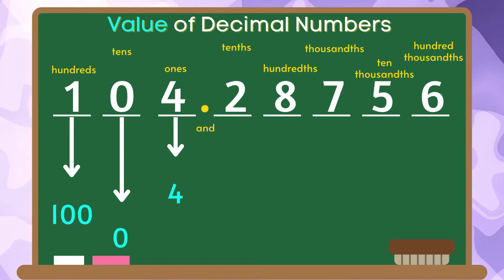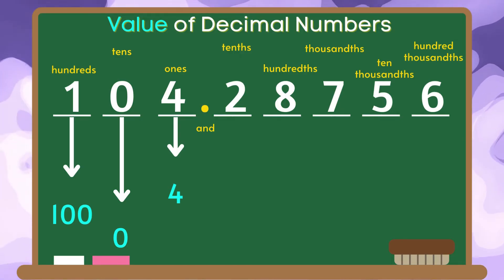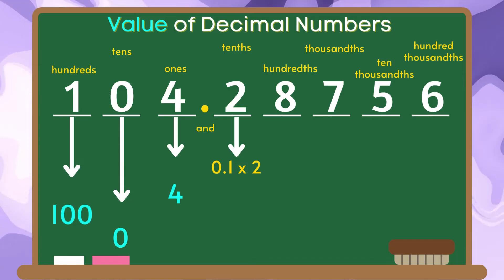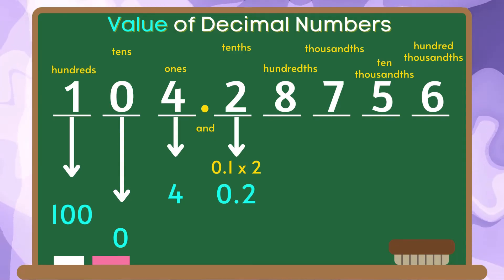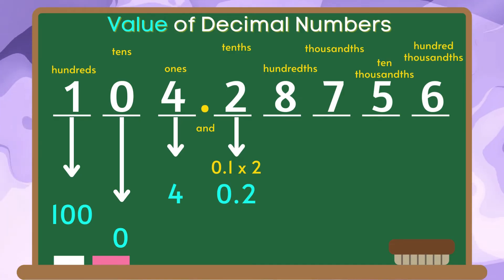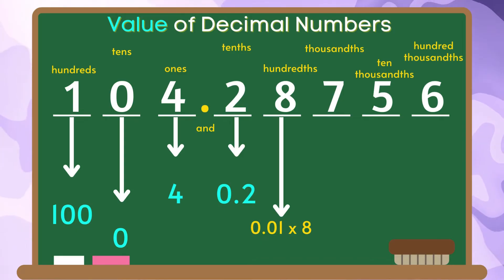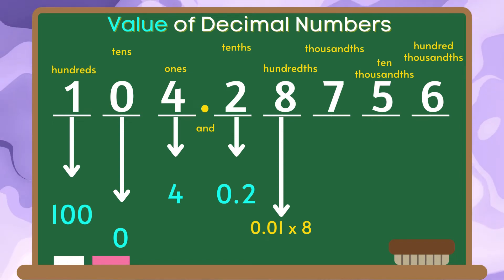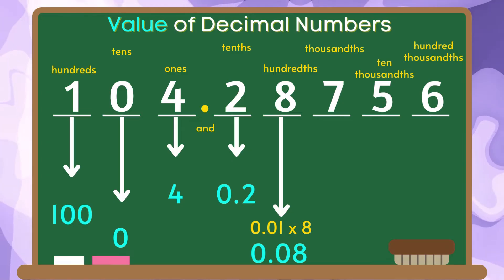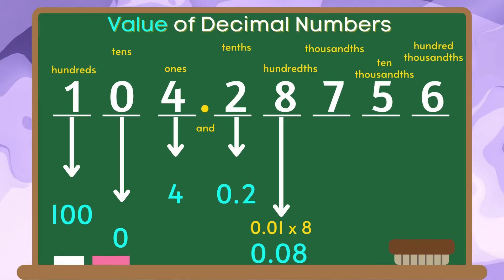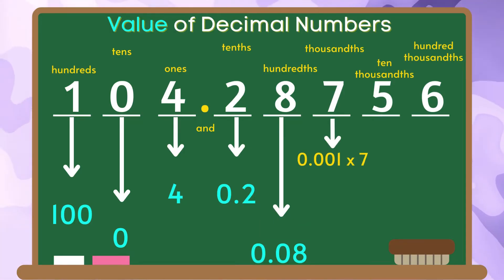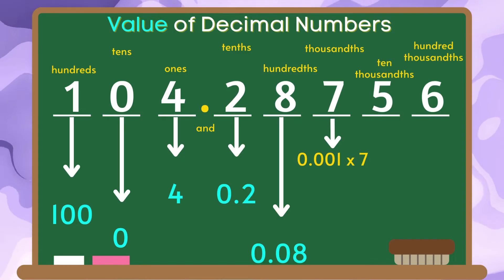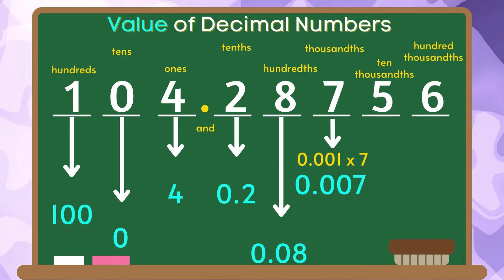Now let us identify the value of the digits in the fractional part of the given decimal number. For the value of the digit two, we are going to multiply two by one tenth and the product is two tenths. Since the digit eight is in the hundredths place value, we are going to multiply eight by one hundredth and the product is eight hundredths. Since the digit seven is in the thousandths place value, we are going to multiply seven by one thousandth and the product is seven thousandths. The value of seven is seven thousandths.